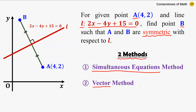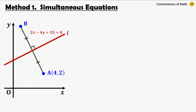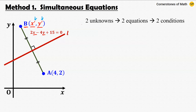The first method is the simultaneous equations method and it does not require the knowledge of advanced tools of analytic geometry such as vectors. We have to find the coordinates of B, which are unknown, so let's call B as x-prime comma y-prime. We use primes here because x and y are already used in the equation and thereby refer to general arbitrary points rather than a specific point. So we have two unknowns, x-prime and y-prime, and we need two equations.